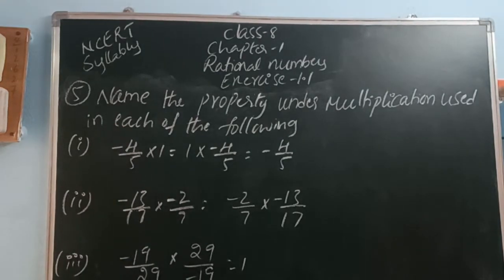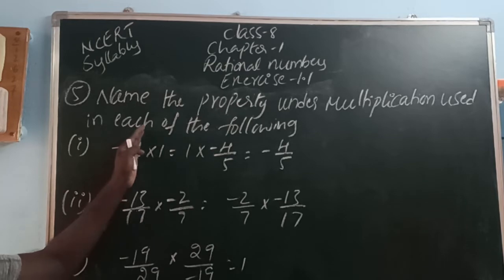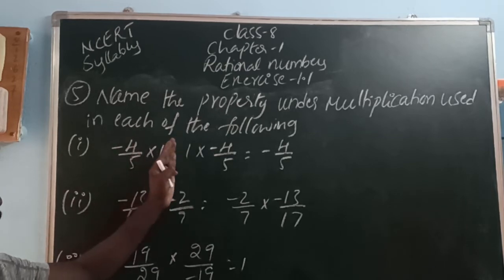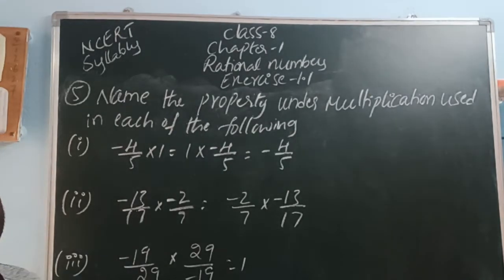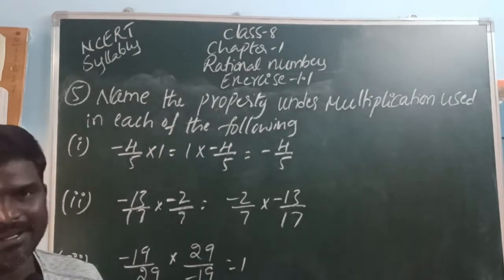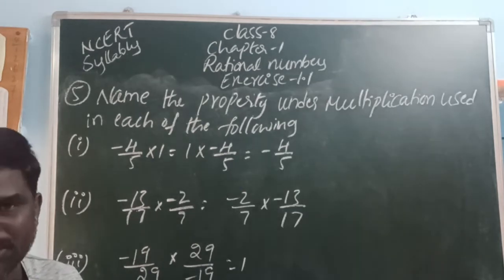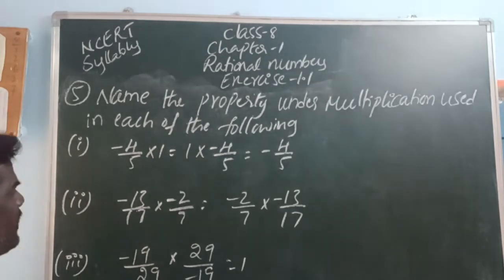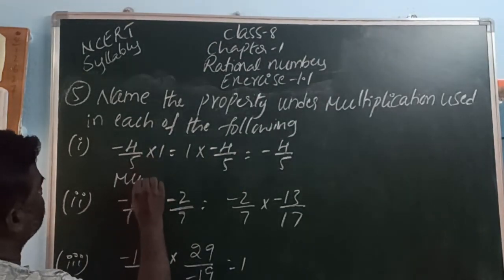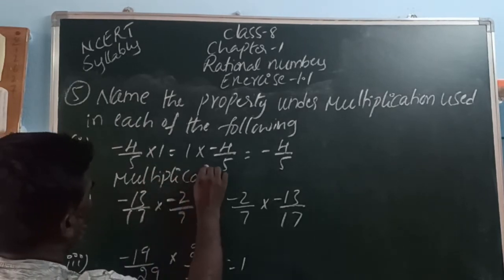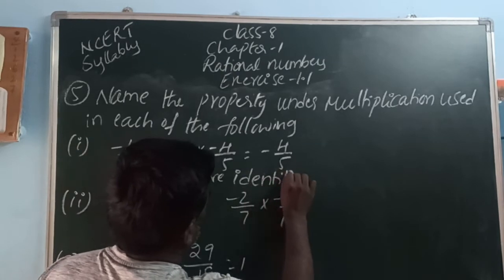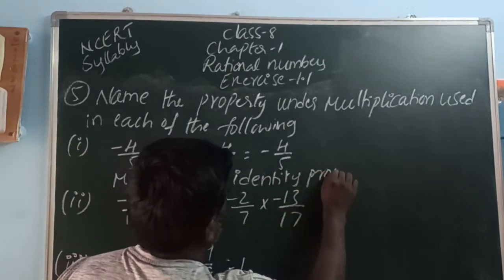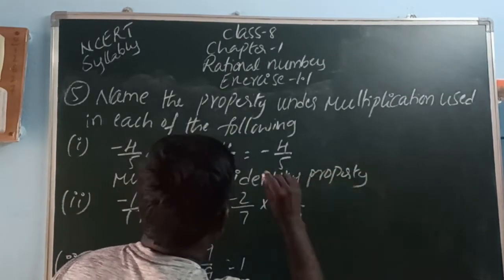Name the property under multiplication used in each of the following. First: minus 4 by 5 into 1 equals 1 into minus 4 by 5 equals minus 4 by 5. Since 1 multiplied by any number gives the same, that property is called multiplicative identity property.